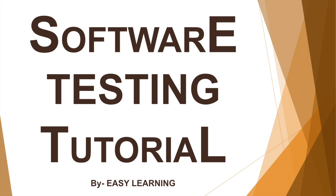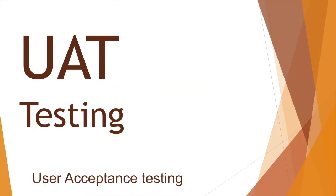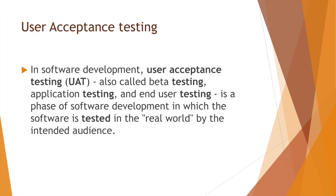Hello friends, welcome to this software testing tutorial series. So what is UAT testing? UAT means User Acceptance Testing. The name itself describes it — User Acceptance Level Testing. UAT is also called beta testing, application testing, and end-user testing.